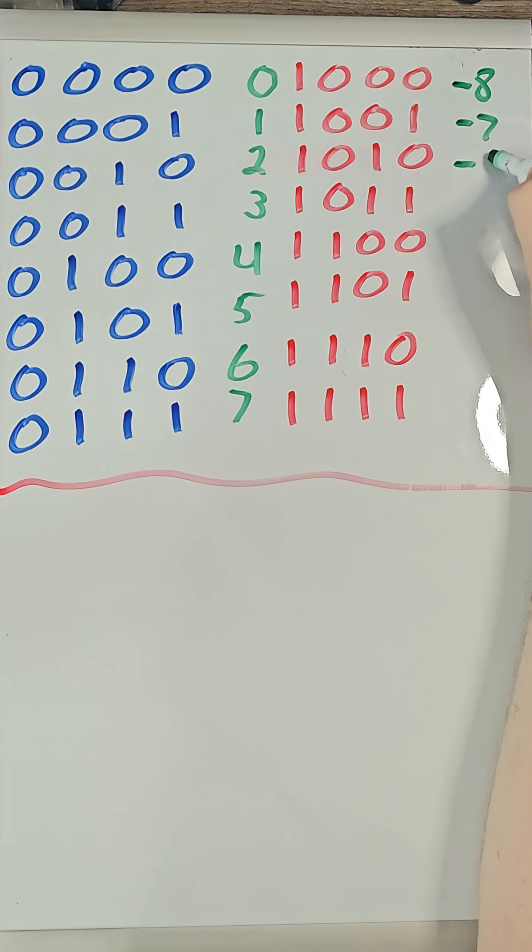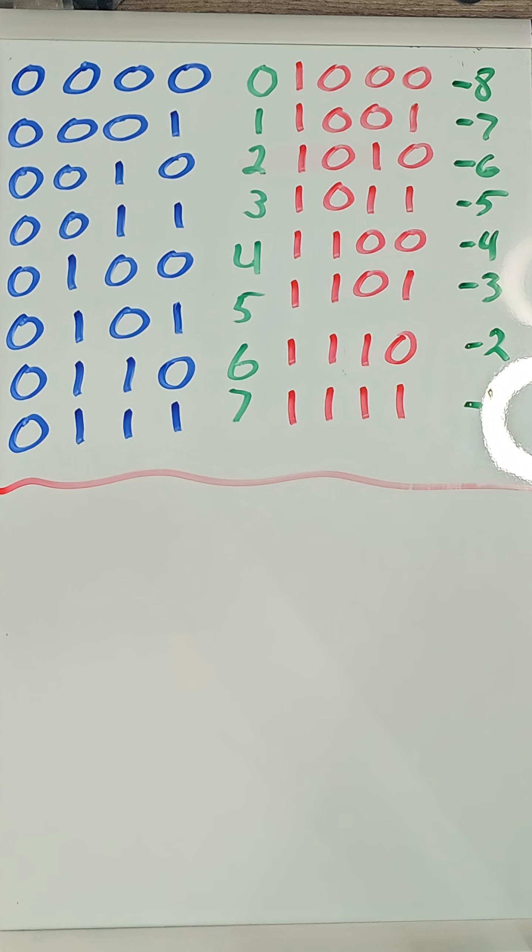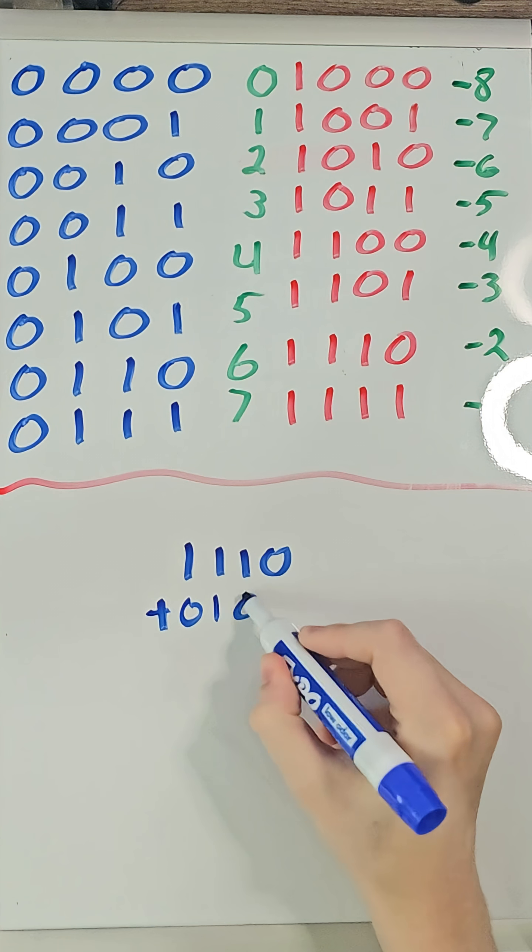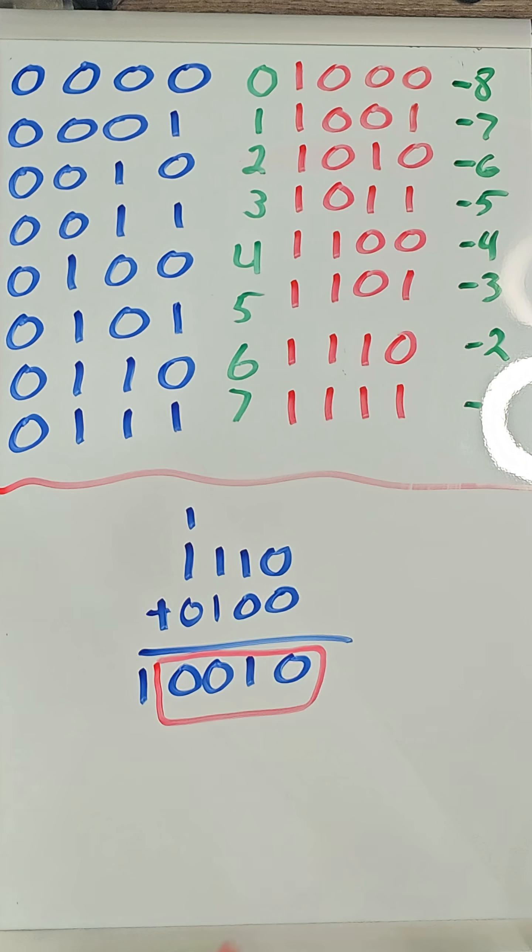So how about we try counting backwards? Instead of 1000 being negative 1, it is actually negative 8, and 1001 is negative 7, and so on. Let's do math with this. Let's try negative 2 plus 4. We are left with 0010, which is 2. This worked.